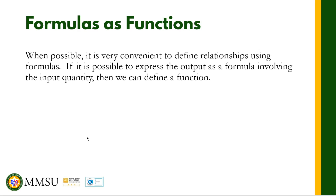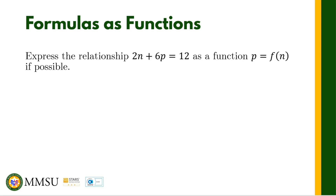For example, we can express the relationship given by the formula 2n plus 6p equals 12, and we are going to define a function p equals f of n, if that is possible. Basically, we want to define a function where the input is n and the output is p — we are going to solve for p in terms of n. So let us start from the given: 2n plus 6p is equal to 12. We want to isolate p on one side of the equation.